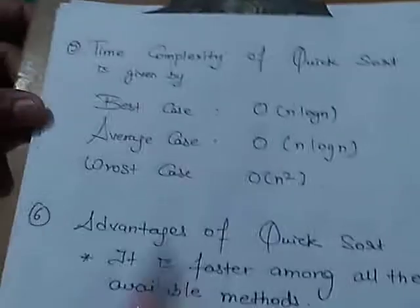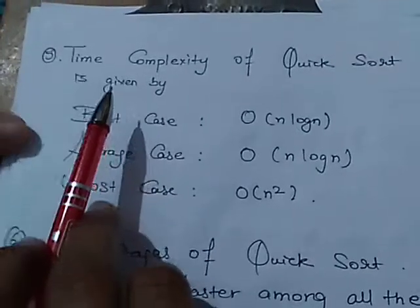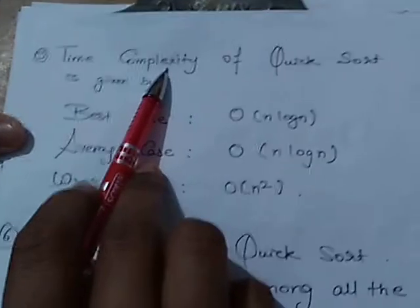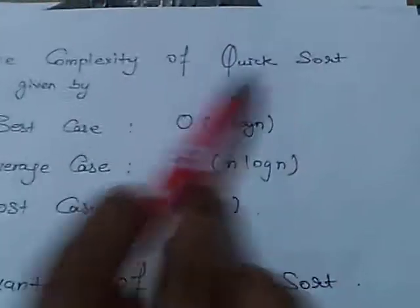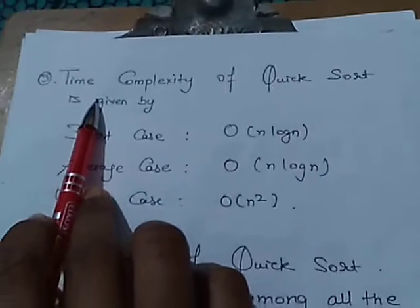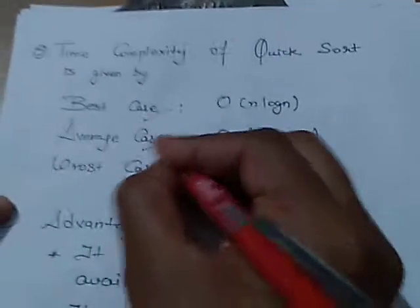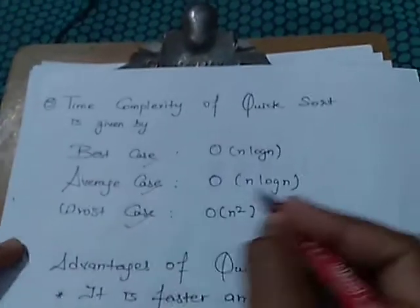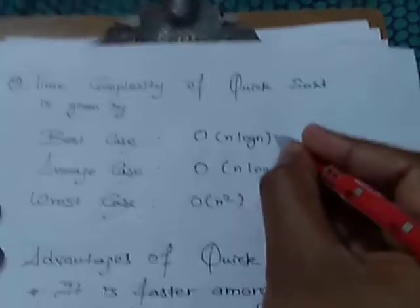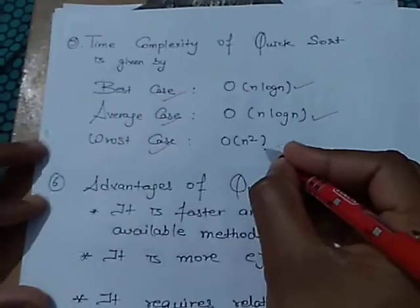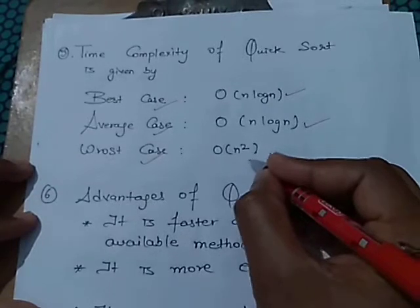Now the fifth point is the time complexity of quick sort is given by, in all the cases: best case, average case, worst case. The best case is given by O(n log n), average case is given by O(n log n), and the worst case is given by O(n²).